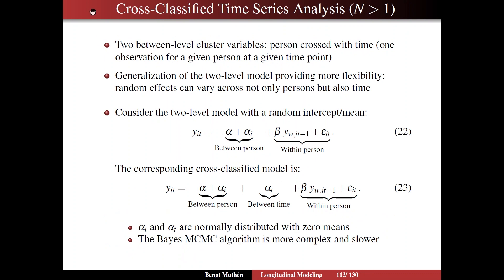On slide 113, I give a short summary of the theory for cross-classified analysis. We're looking at one single variable. Now we have two between-level cluster variables: person and time. Person is crossed with time, and in this case we have only one observation for a given person at a given time point. That's a little different than typical cross-classified analysis in multi-level modeling, where you have, say, neighborhoods and schools and several observations within each cross. Here we have just one.